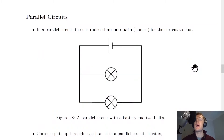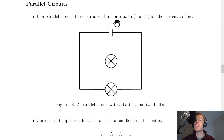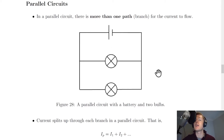What do we mean by a parallel circuit? Well, unlike series circuits, a parallel circuit is one where there is more than one path or branch for the current to flow. So if you have a look at this circuit here, this is what we call a parallel circuit, where we have a battery and say two bulbs in parallel with the battery. And you'll notice there is no longer just one path or one branch for the current to flow — there's more than one.